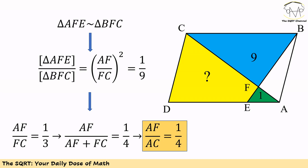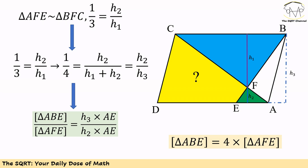Remember, AF + FC is actually AC, so AF/AC = 1/4. Now for the heights of the similar triangles: let H1 be the height of the blue triangle and H2 be the height of the green triangle. Since they are similar, H2/H1 = 1/3. Using the same trick, H2 over (H1 + H2) equals 1/4. Since H1 + H2 equals H3, we have H2/H3 = 1/4, where H3 is the height to base AE.